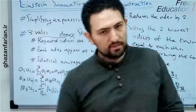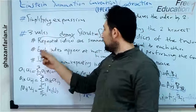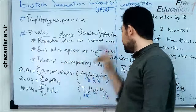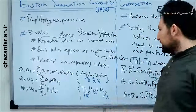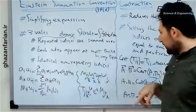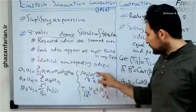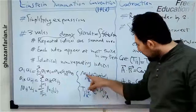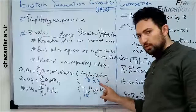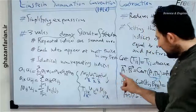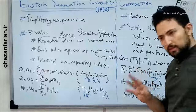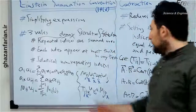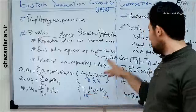The next rule is: each index appears at most twice in any term. For example, pay attention to this expression. I have a second-order tensor and two vectors, plus again a vector. Here I have m_ij, u_j, v_j — you can see that j appears in this expression in three places. So this is not valid based on the rules of Einstein's summation convention, since each index must appear at most twice in any term.